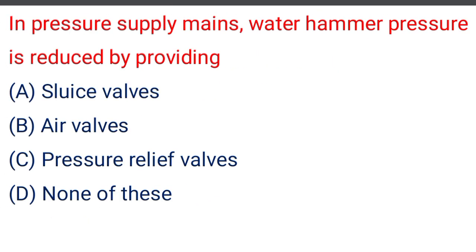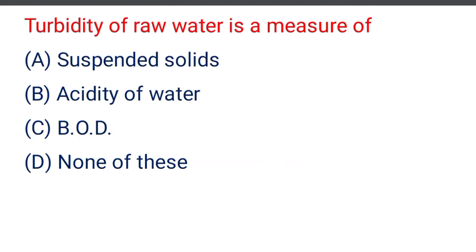Next question: in the pressure supply mains, water hammer pressure is reduced by providing — option A relief valve, option B air valves, option C pressure relief valves, option D none of the above. The correct answer is option C, pressure relief valve.